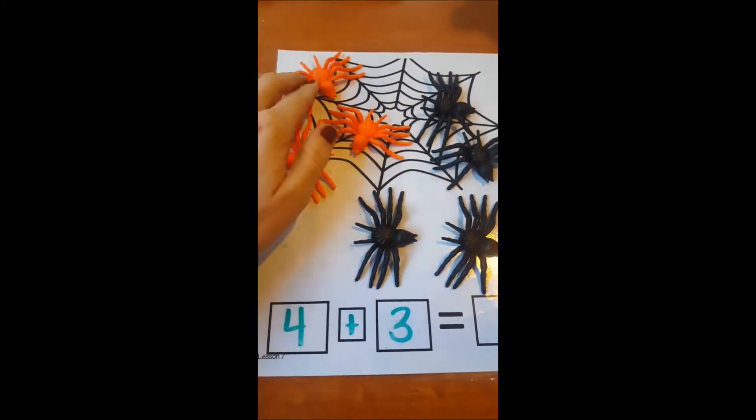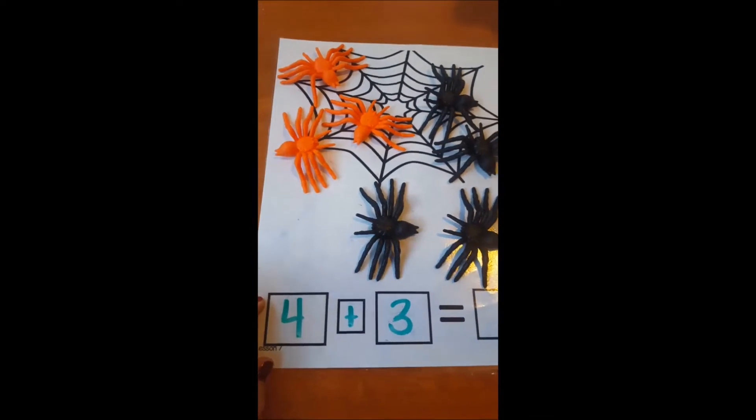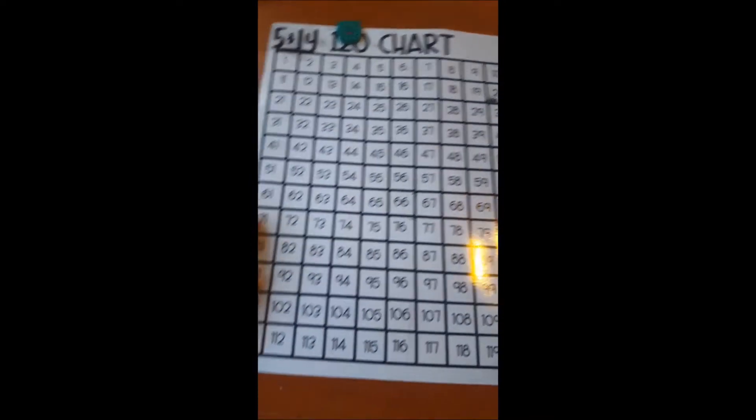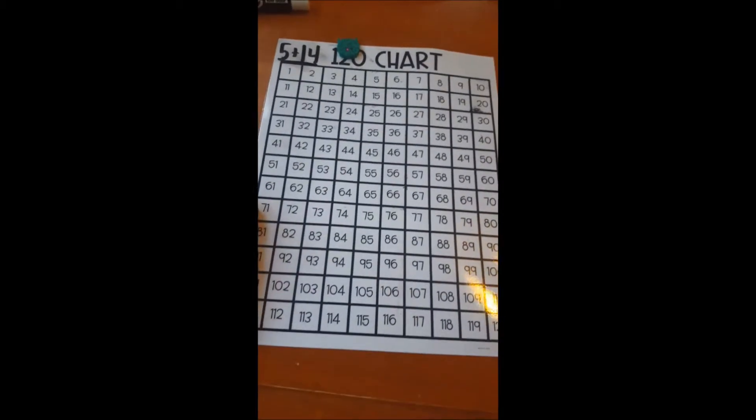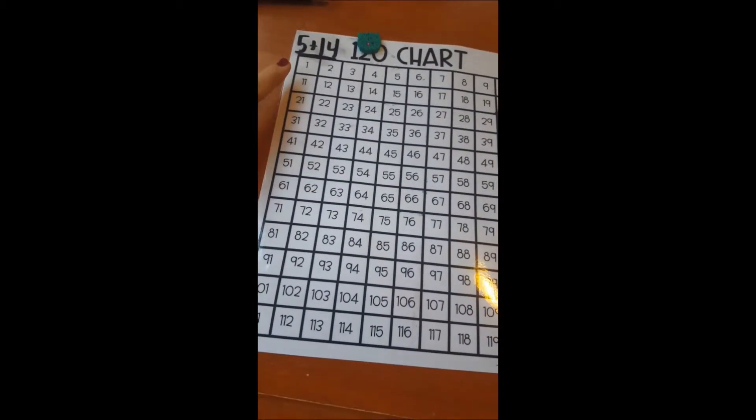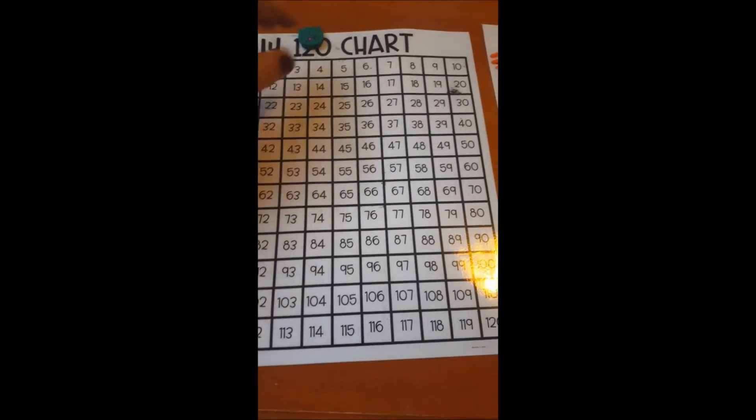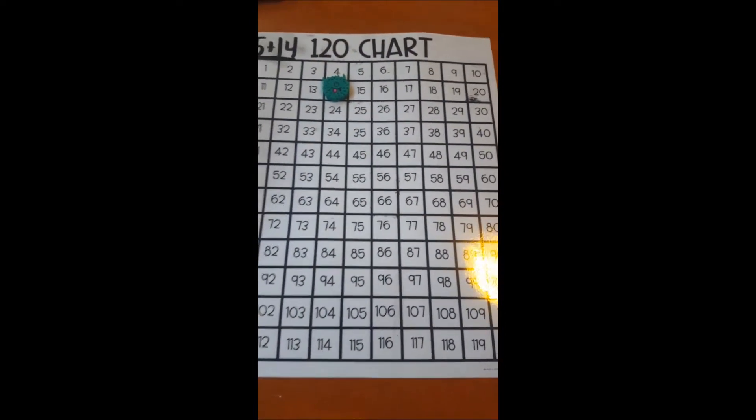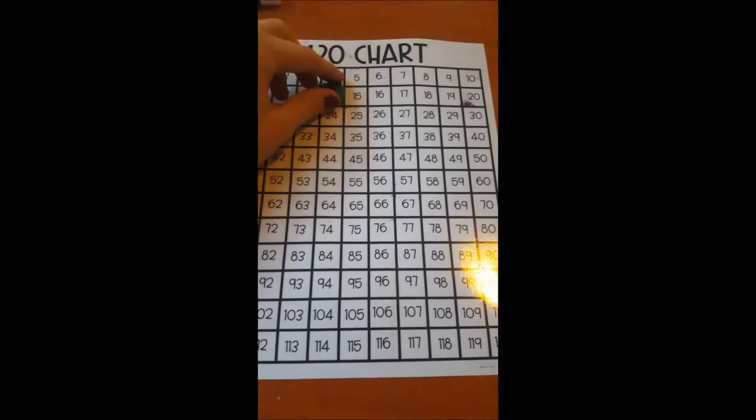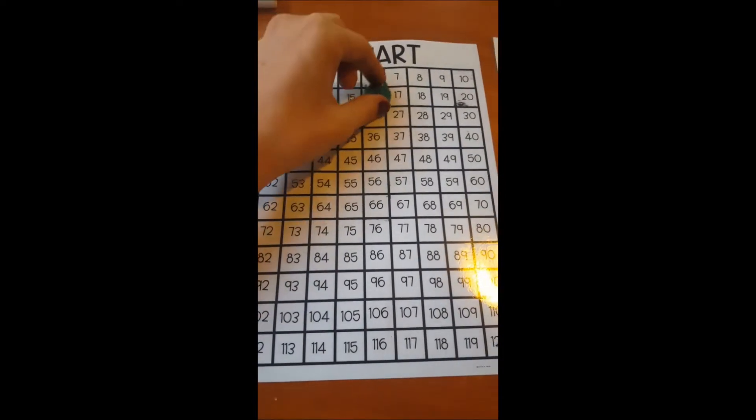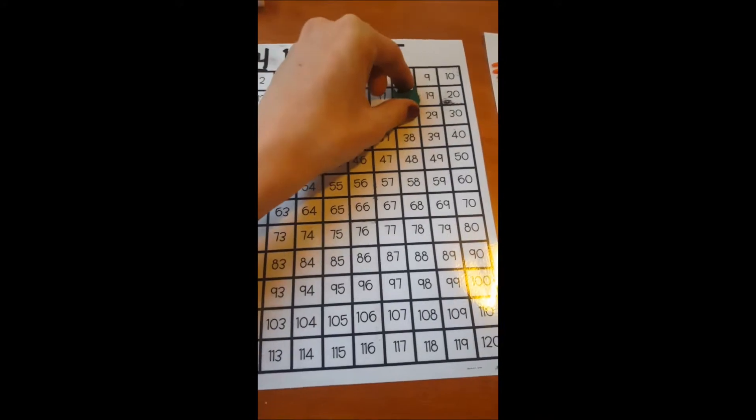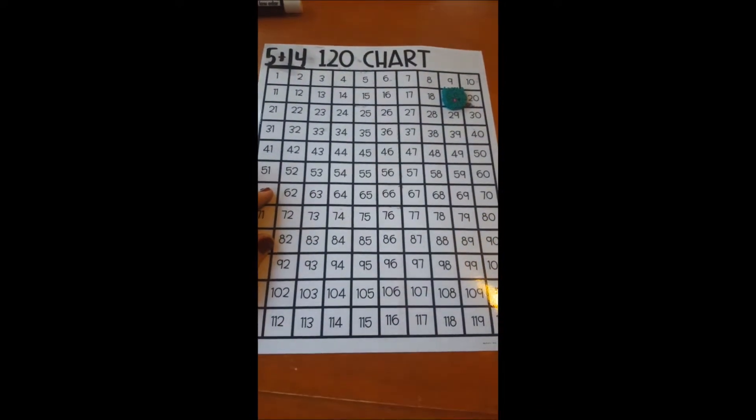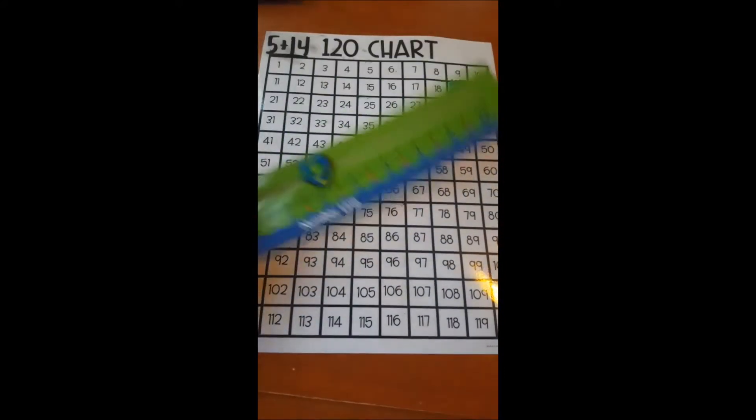We can also use a hundreds chart or 120 chart to help us do this. If we're doing five plus fourteen, we'd start with the bigger number, go to 14, and then count on from there: 14, 15, 16, 17, 18, 19.